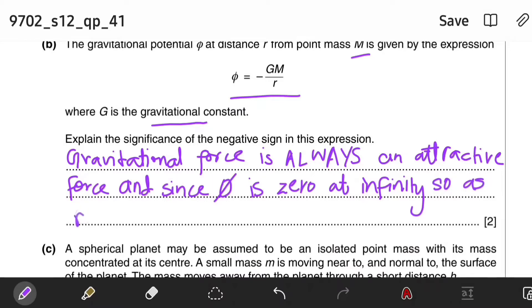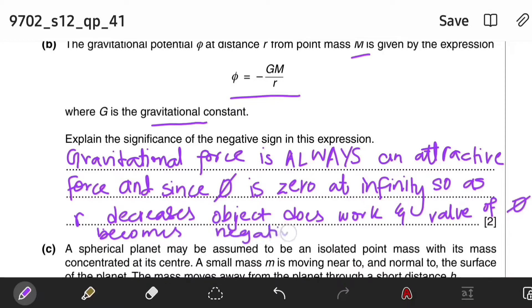So as r decreases, the object does work and the value of gravitational potential becomes negative.